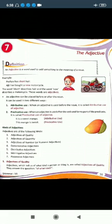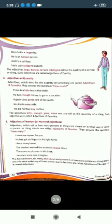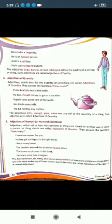Adjectives which tell us what kind of person or thing is meant are called adjectives of quality. They answer the question 'of what kind?' — for example, honest, tall, and intelligent tell us the quality of a person or thing. How is the city? The city is large. Such adjectives are called adjectives of quality.